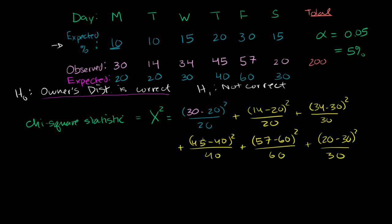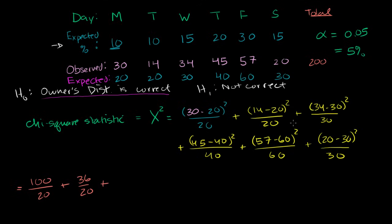Now let's calculate each term. 30−20 = 10, squared = 100, divided by 20 gives 5, so 100/20. Then 14−20 = −6, squared = 36, so 36/20. Then 34−30 = 4, squared = 16, so 16/30. Then 45−40 = 5, squared = 25, so 25/40. Then 57−60 = −3, squared = 9, so 9/60. Finally 20−30 = −10, squared = 100, so 100/30.